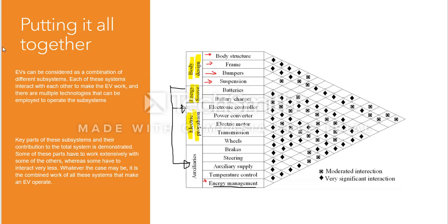Whenever you see this symbol, it means that significant interaction is happening between the vehicle and the battery. If we put it all together, we see that EVs can be considered as a combination of different subsystems, and each of these interacts with each other to make the car work. There are multiple technologies employed in these subsystems.